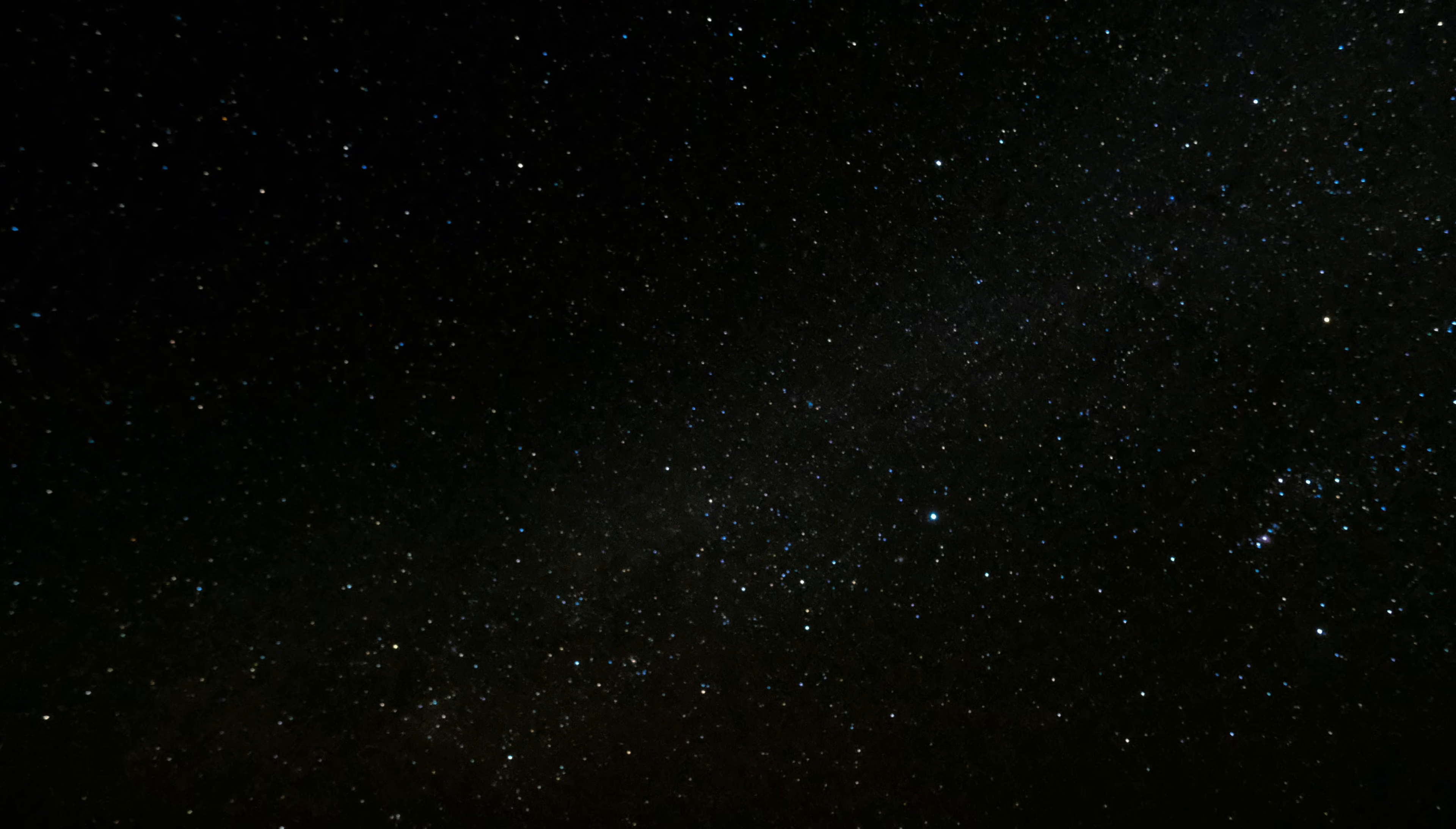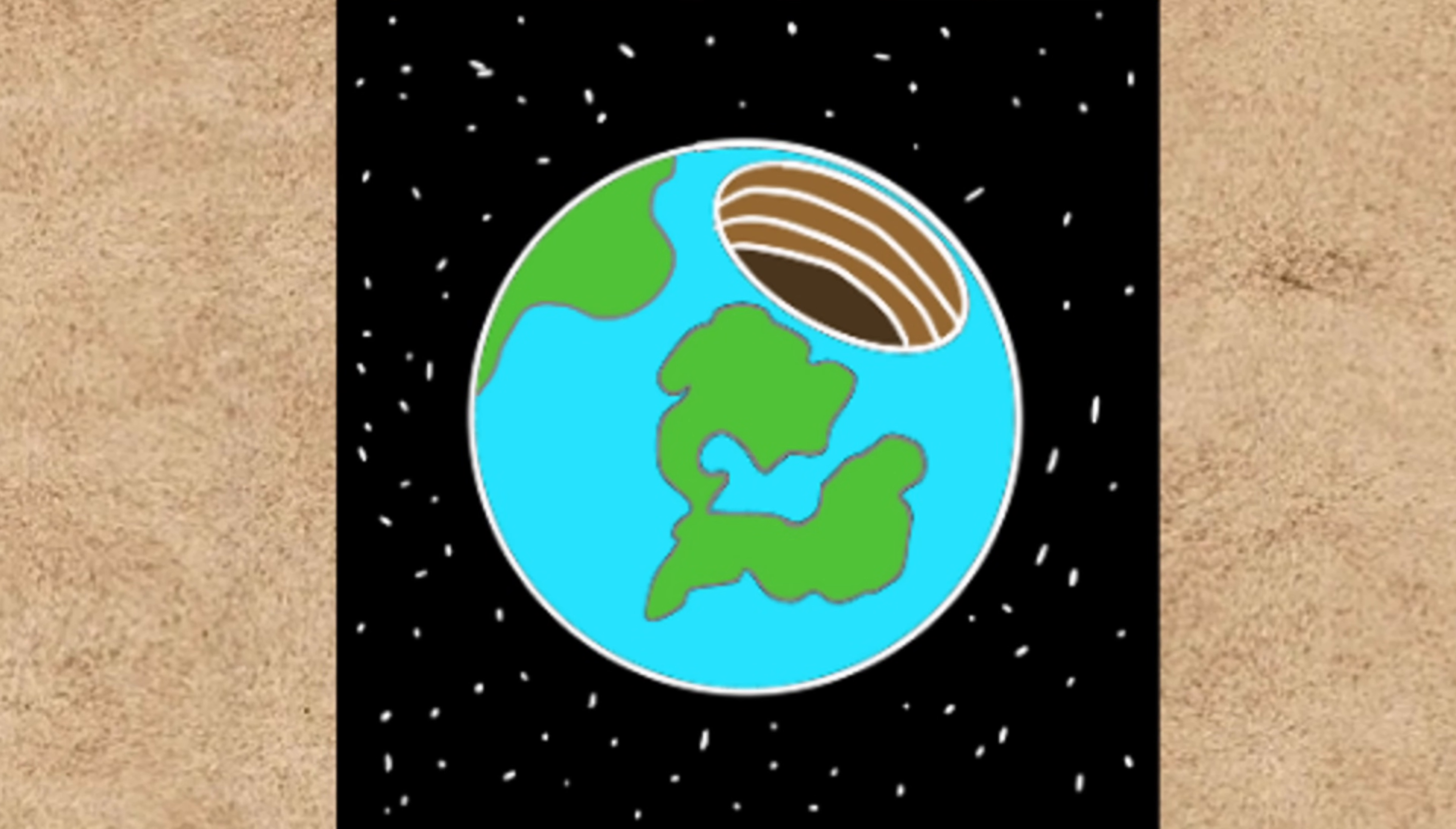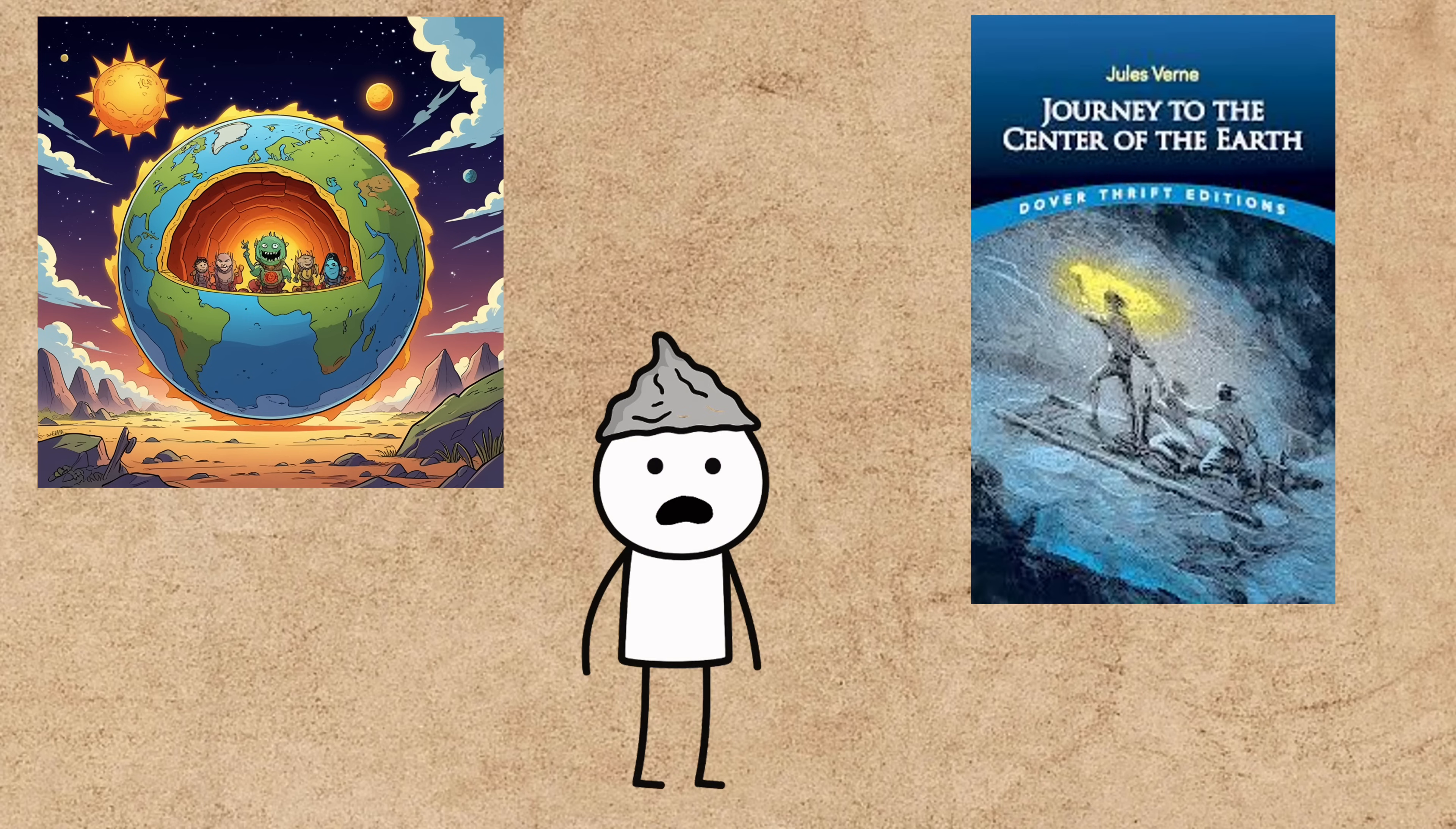Our runner-up for the strangest theory is the wild idea that our planet is completely hollow. The hollow Earth theory has popped up for centuries, suggesting that instead of a solid core, the Earth is a hollow shell with entire civilizations, monsters, or maybe even a tiny sun living inside. While mostly the stuff of folklore and fiction, like Jules Verne's journey to the center of the Earth, the idea was proposed as a serious scientific hypothesis a few times.